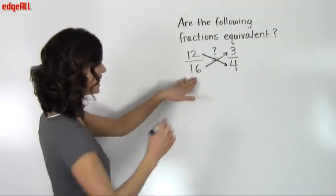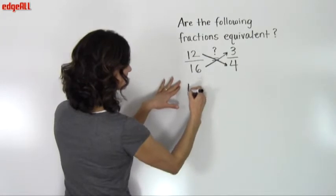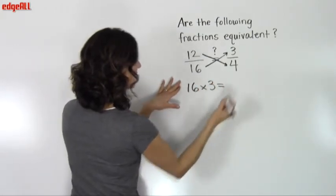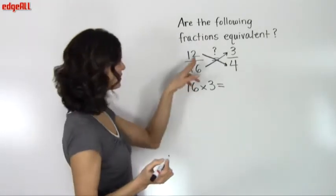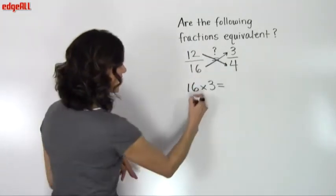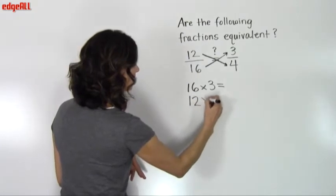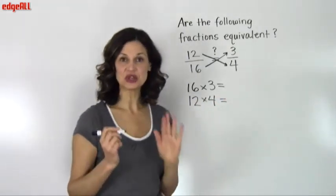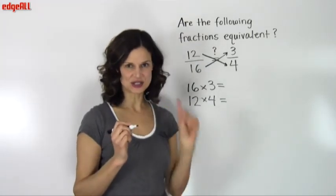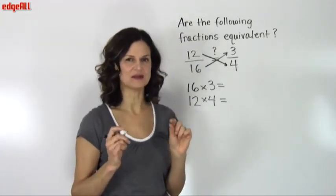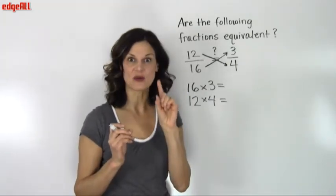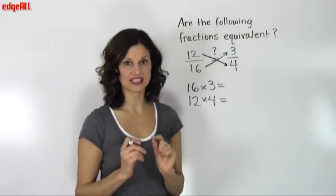We start by multiplying 16 times 3 and find the answer to that. And then we multiply 12 times 4 and find the answer to that. Now if the two answers to those two multiplication problems are equal to each other, then that tells us that we do have equivalent fractions.